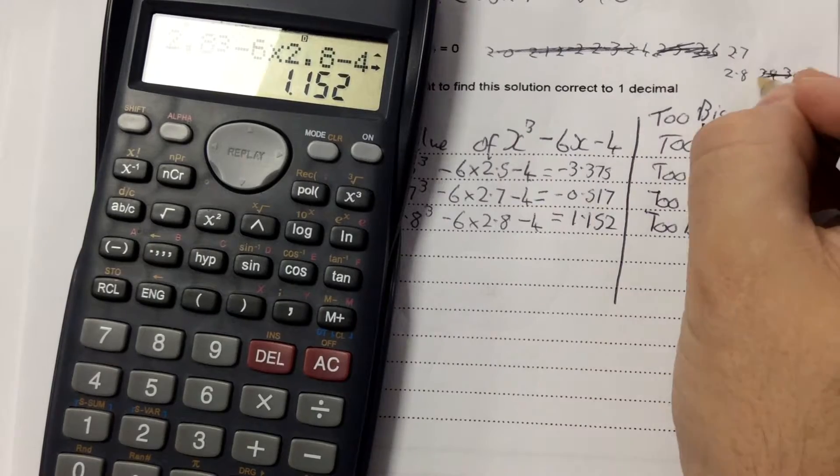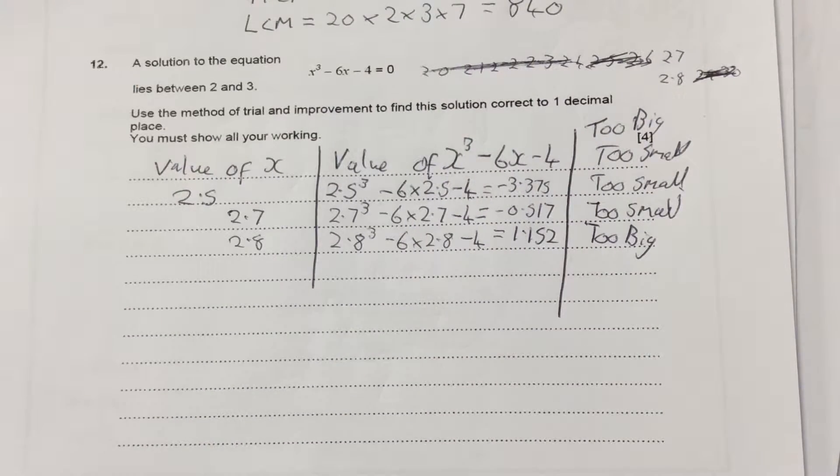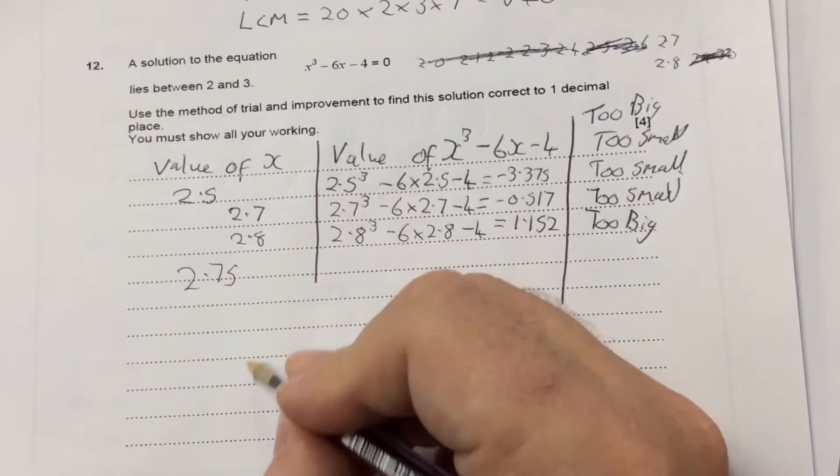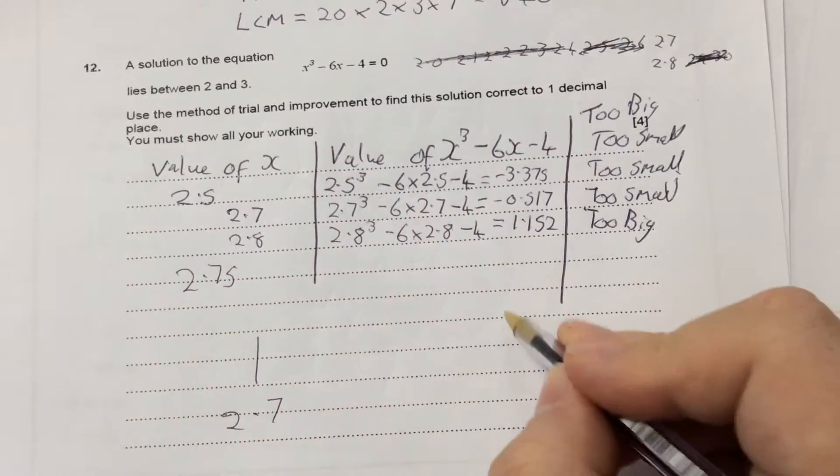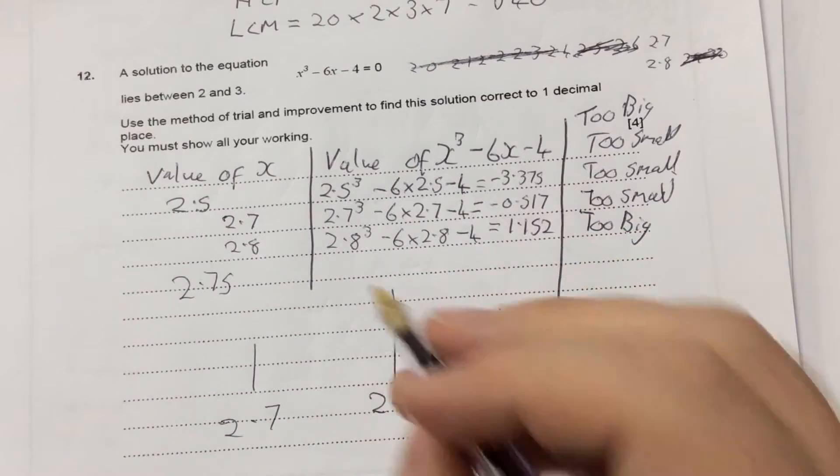So straight away now, my answer is either 2.7 or 2.8. The only way you can check is by trying the one in the middle. So I know it's either 2.7 or 2.8, I'm going to try the one in the middle, 2.75.